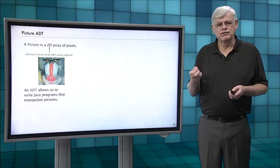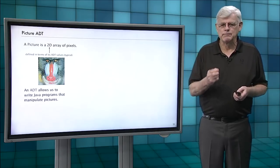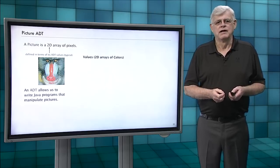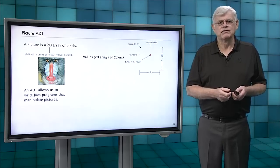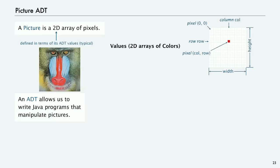And we're going to have an abstract data type that allows us to write programs that manipulate pictures. So values are 2D arrays of colors. Just to get oriented, we think of this as rows and columns with 0,0 up at the top left. So we use two indices to refer to the pixel at a particular place - we have its column and we have its row. It's got a certain width and a certain height.